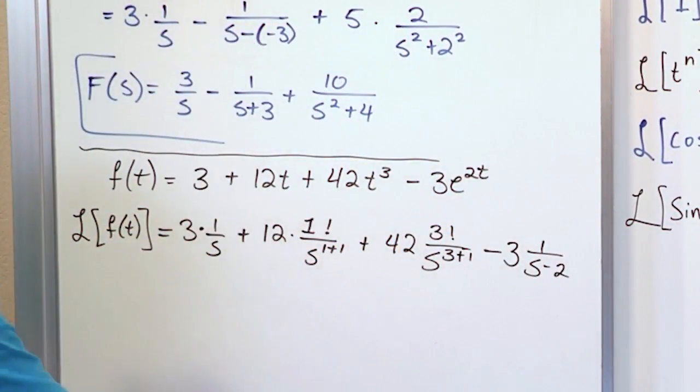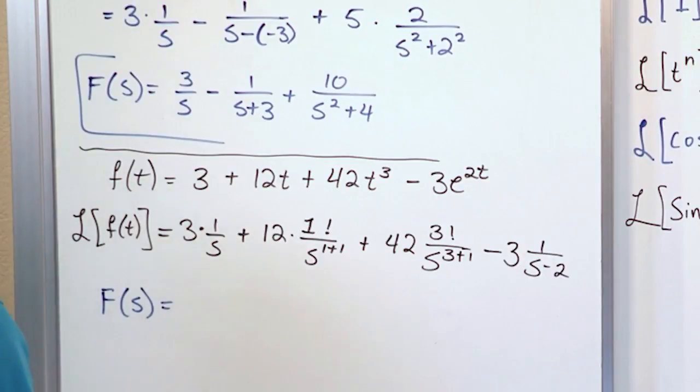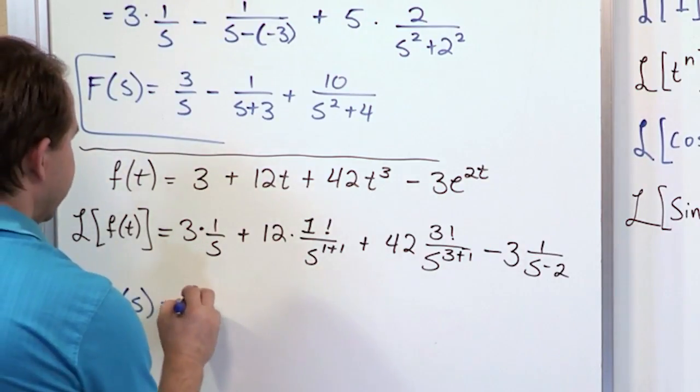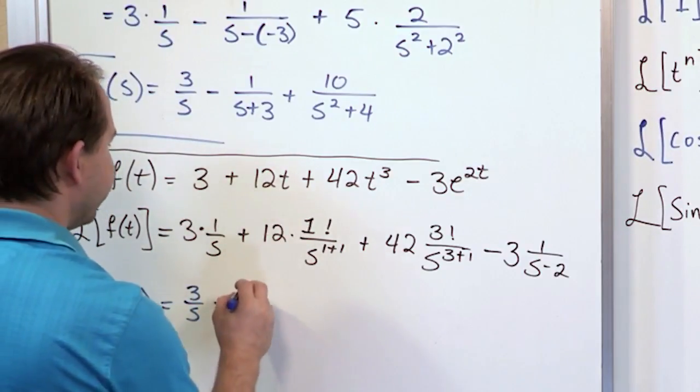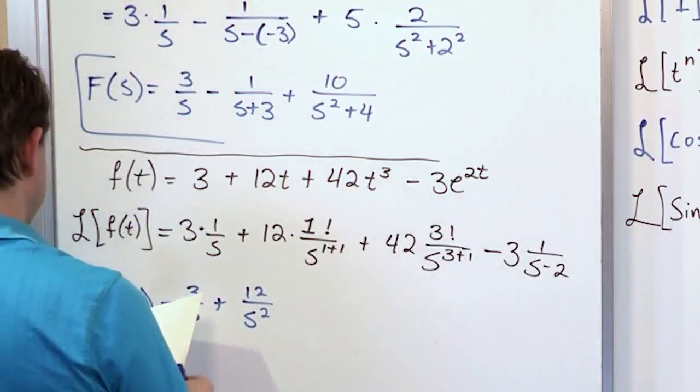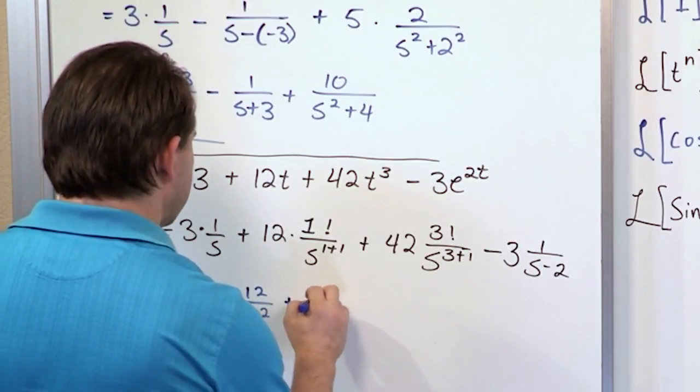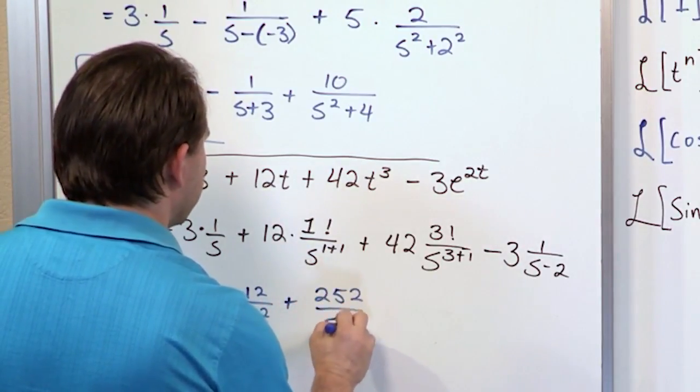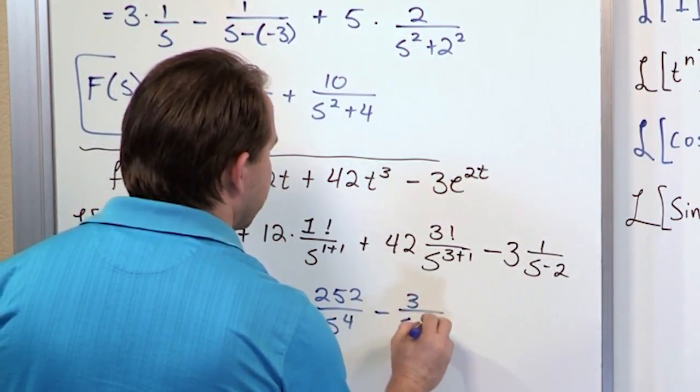So at the end of the day the Laplace transform is a function of s. It's going to be 3 over s plus 12 times 1 is just 12 over s squared. 42 times 3 factorial is 252 over s to the 4th power here. Minus 3 over s minus 2.